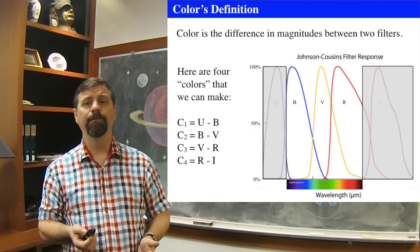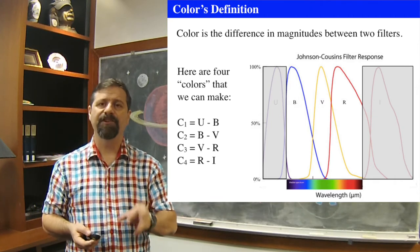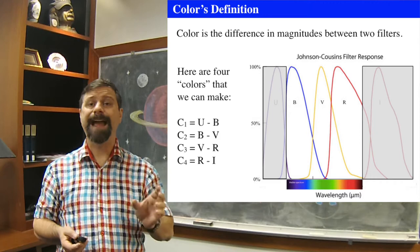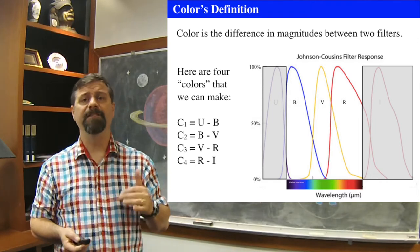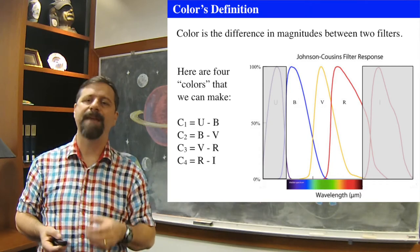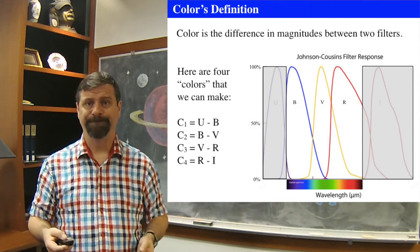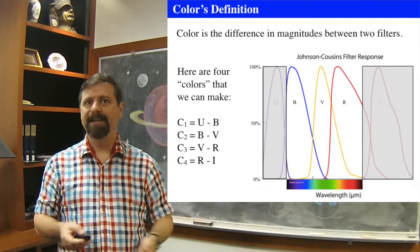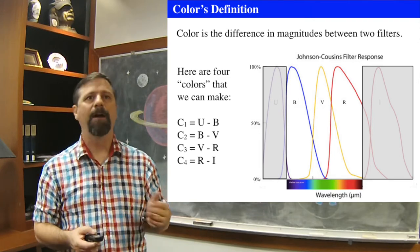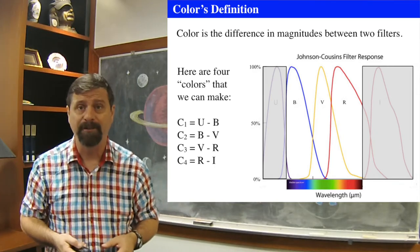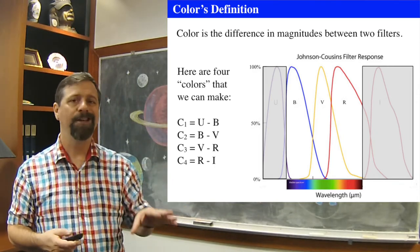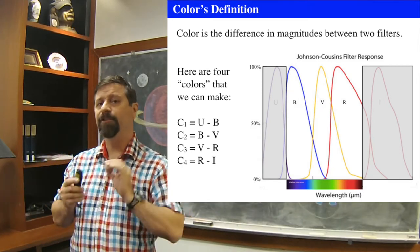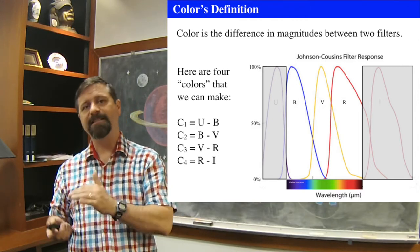A standard color used frequently throughout all astronomy is an observation in the B filter and an observation in the V filter. You take the difference in those observations — the magnitude difference between B and V. If you take the magnitude of B and subtract from it the magnitude of V, that is the color. So there are lots of different ways we can call color, and therefore we can quantify it — not just calling it magenta or red or puce or aquamarine or any of the 64 names in a Crayola crayon box.